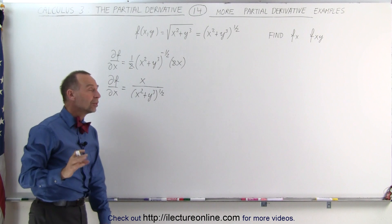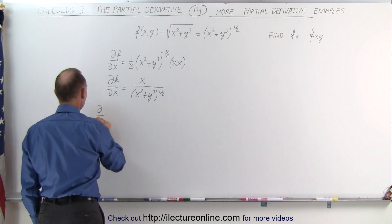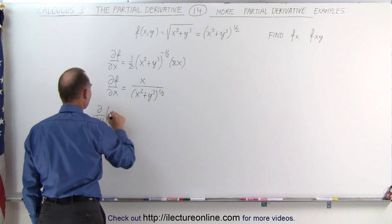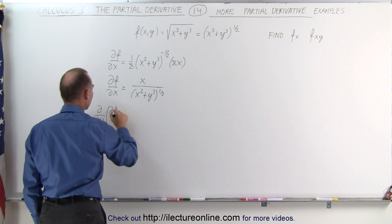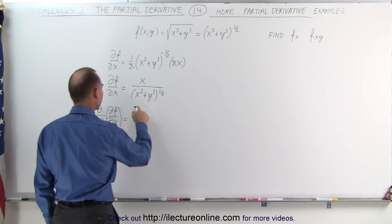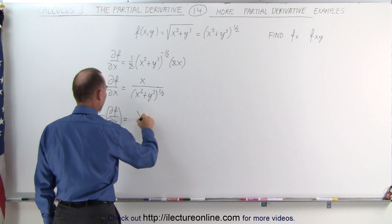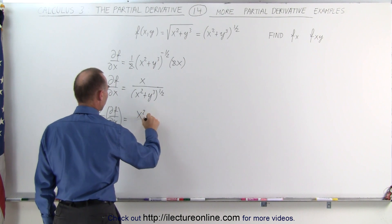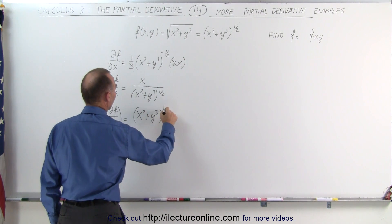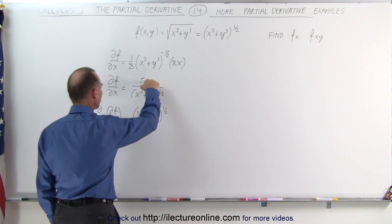Now we're going to take the partial derivative of this with respect to the variable y. We apply the quotient rule, taking the denominator — x squared plus y cubed to the one-half power — times the derivative of the numerator.